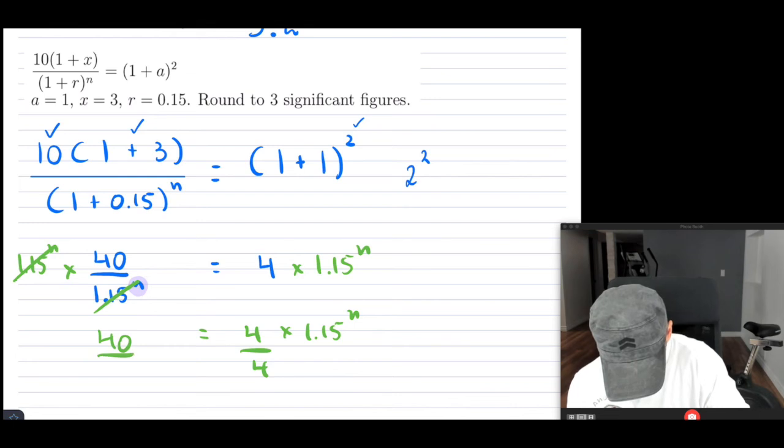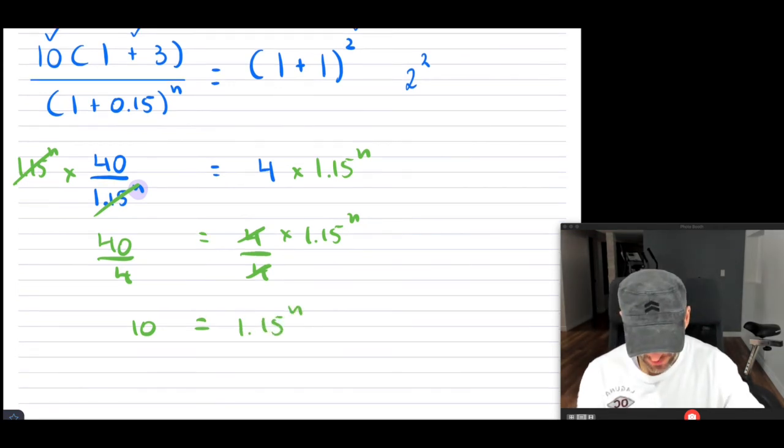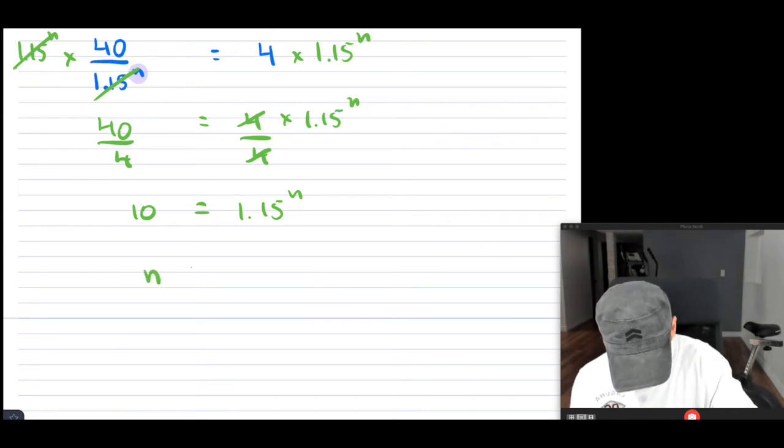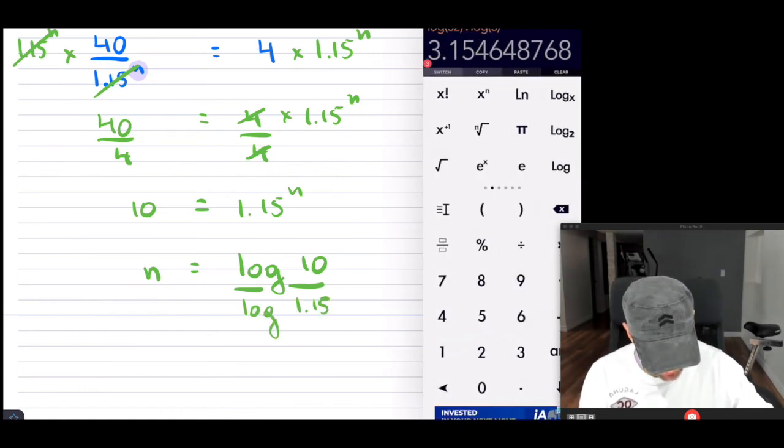Now, I don't want to have this 4, so I can divide both sides. It's going to be 10 equals to 1.15n. And now, if you take log of both sides, we're basically solving for n. So you're going to get n equals to whatever your answer is. That's actually going to be 1, because log of 10 is 1. And then divide it by log of 1.15.